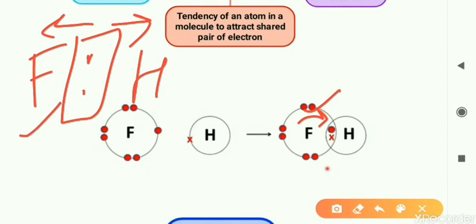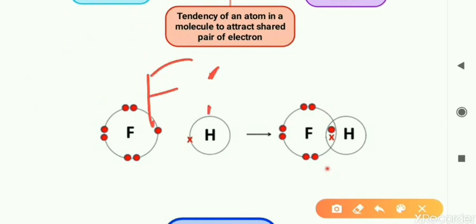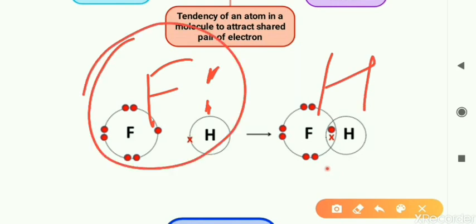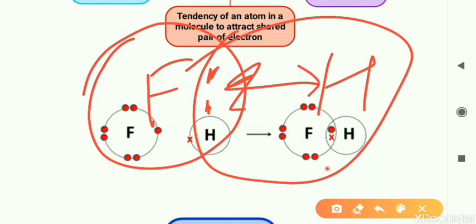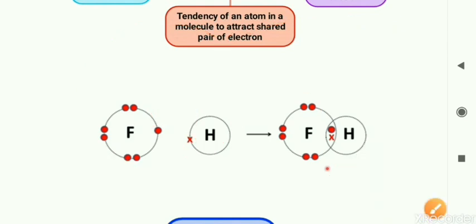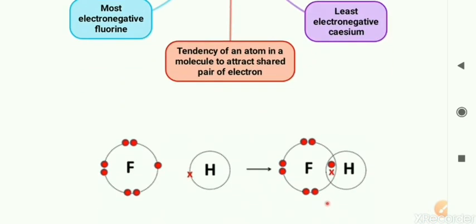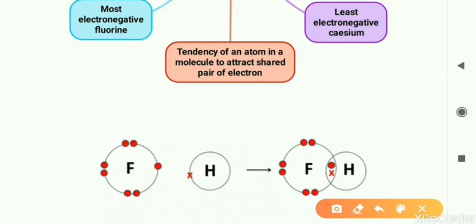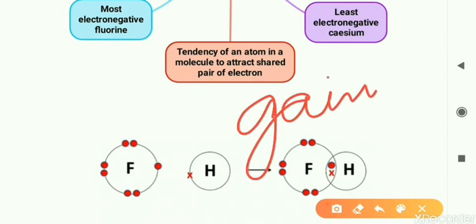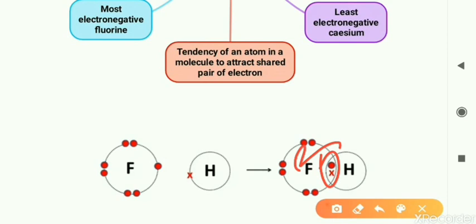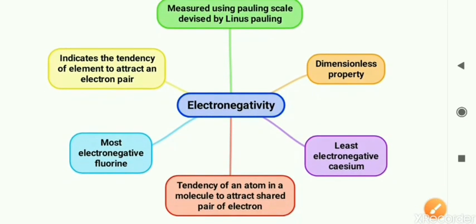Fluorine is more electronegative compared to hydrogen. As a result, fluorine attracts the shared pair of electrons — the electrons will be closer to the fluorine atom, and the hydrogen nucleus will be farther away. You should not confuse this with electron affinity. In electron affinity, energy is required to gain an electron — here there is no gain of electrons. The electrons are only attracted towards a particular atom; they shift a little bit but are not gained by another atom. Fluorine is not gaining the electron into its own orbit — it is just a shift in position of the shared pair.